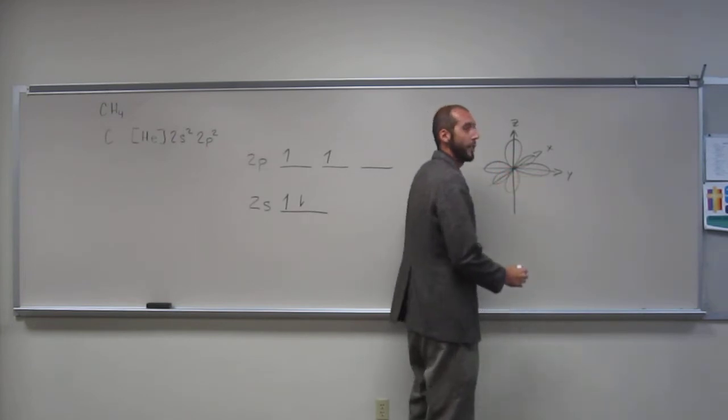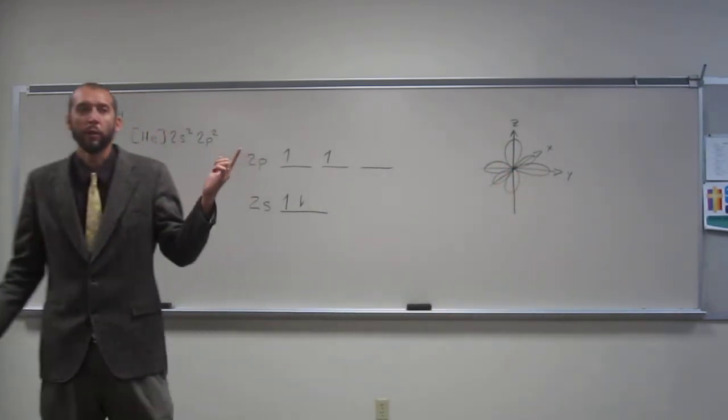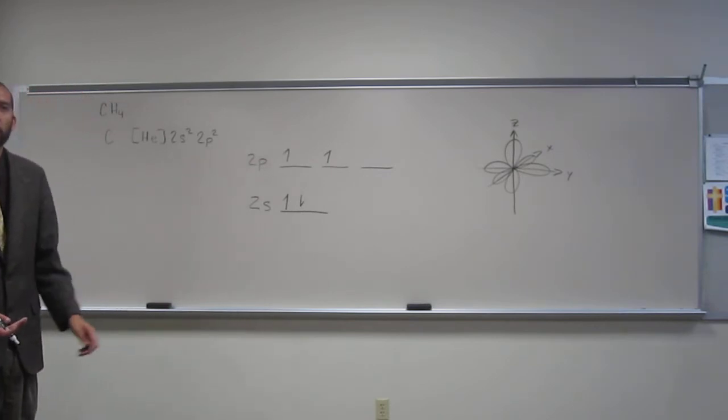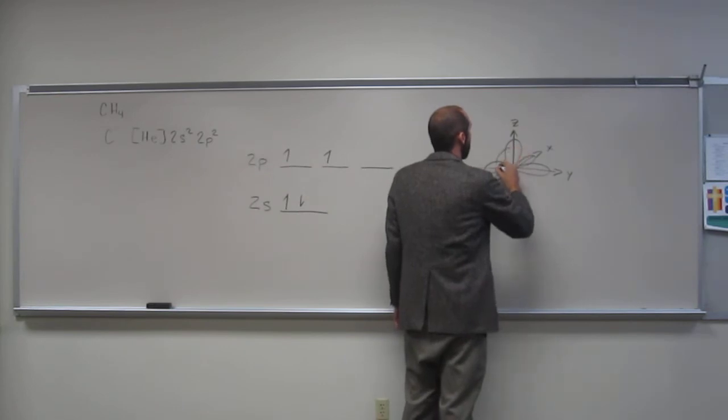these axes—what's the angle between those orbitals on this axis? 90 degrees. So if we were going to measure the angle between the z and the y axis there, it would be 90 degrees.